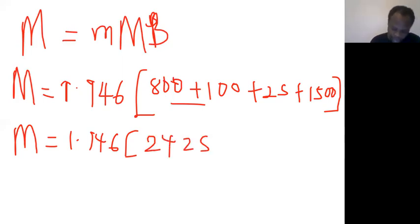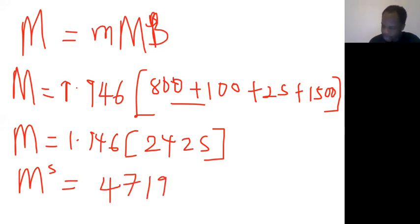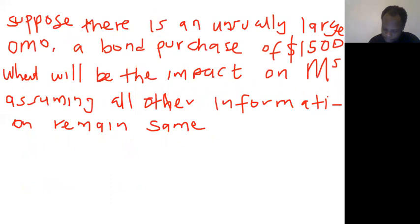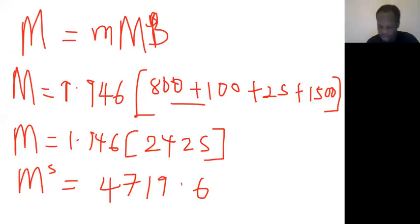That means our money supply equals 4719.6 dollars. So we were asked to look at the impact on it. Previously the money supply was currency plus deposit, but now it increased to 4719.